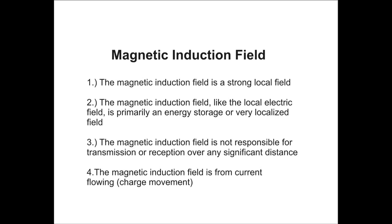The other local field that couples strongly to things in the immediate vicinity of the antenna is the magnetic induction field. The magnetic induction field, just like the local electric field, is primarily an energy storage or very localized field. It is not responsible for transmission or reception over any significant distance. The magnetic induction field is from current flowing — from charge movement — not from charge acceleration.